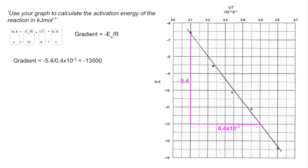So that comes out at minus 13500. So that equals minus Ea over R. So we can lose the minus signs now because they're on both sides. And rearranging that, Ea activation energy comes out at 112,239 joules per mole.